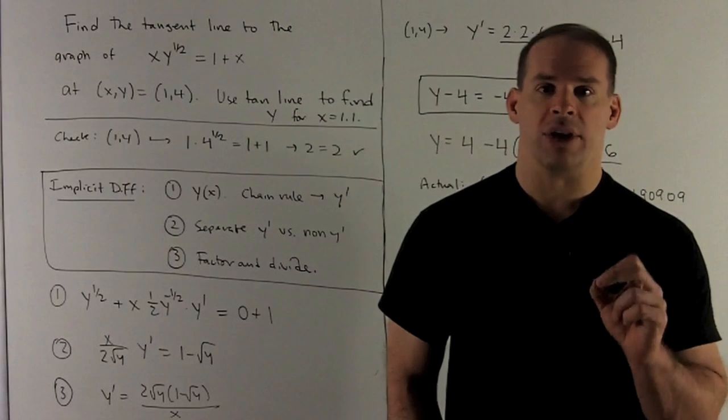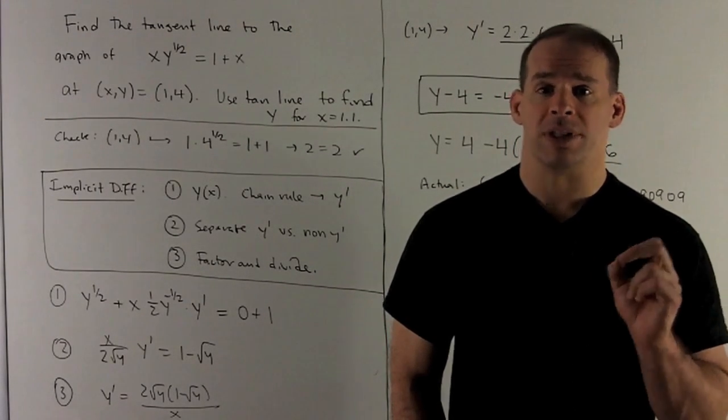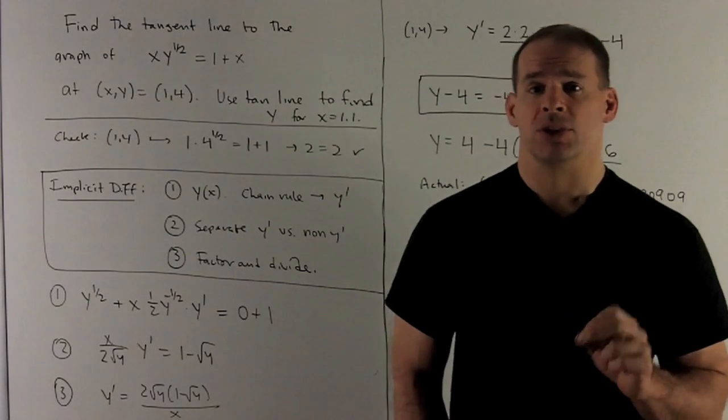Now, I want the equation of a tangent line, so what do I need? I need a point and I need a slope. Our point's given to us as (1,4), so we just need the slope.